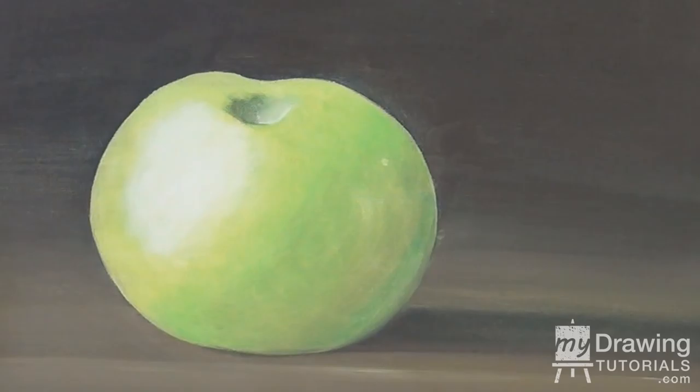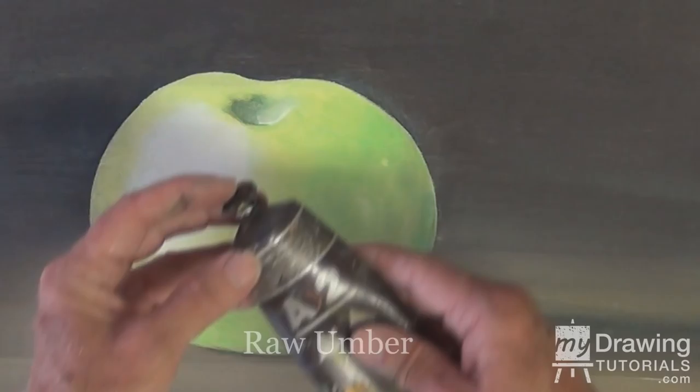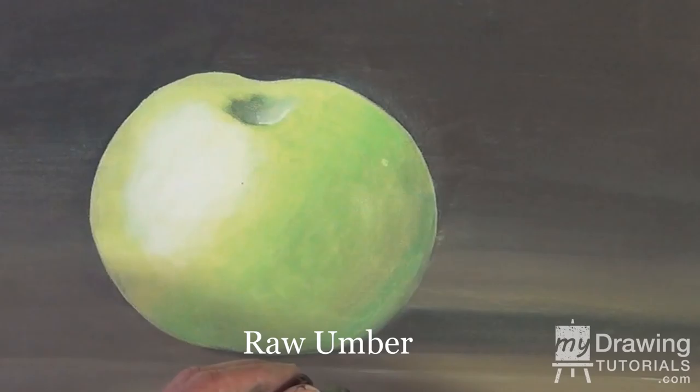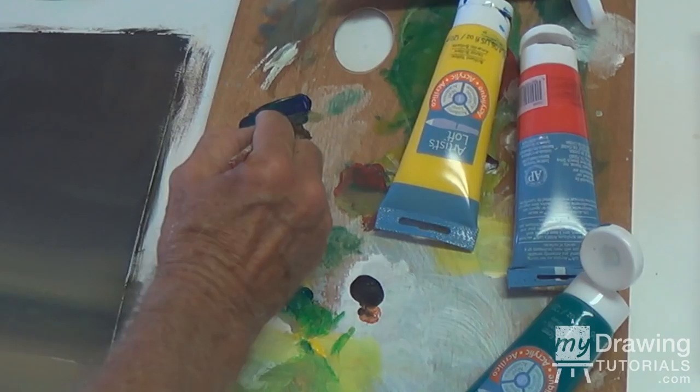At this point I'm introducing a tube of brown called raw umber because this is a black brown and it's just handier to have some on hand for it. And I'm going to use it for details here.